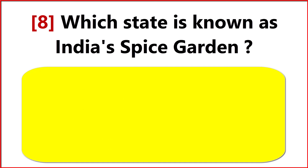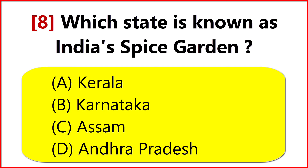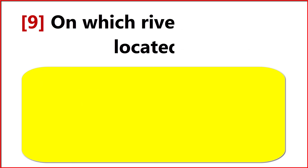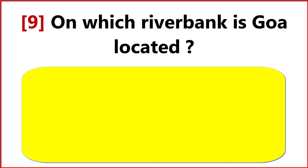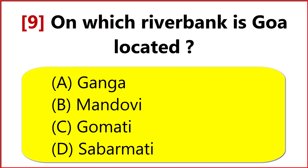Which state is known as India's Spice Garden? Option A: Kerala. On which river bank is Goa located? Option B: Mandavi.